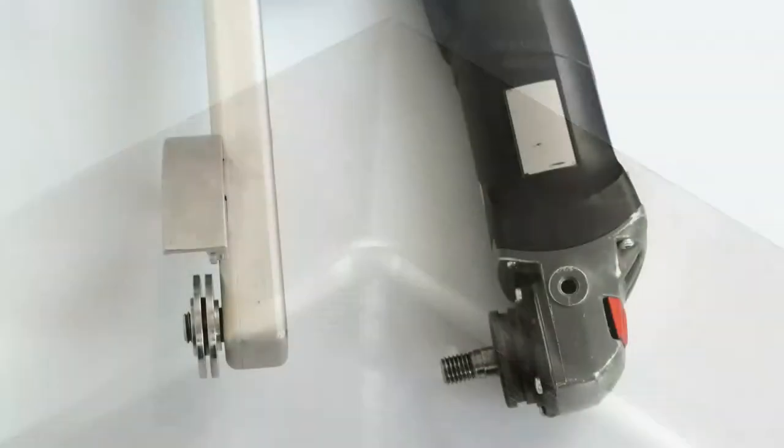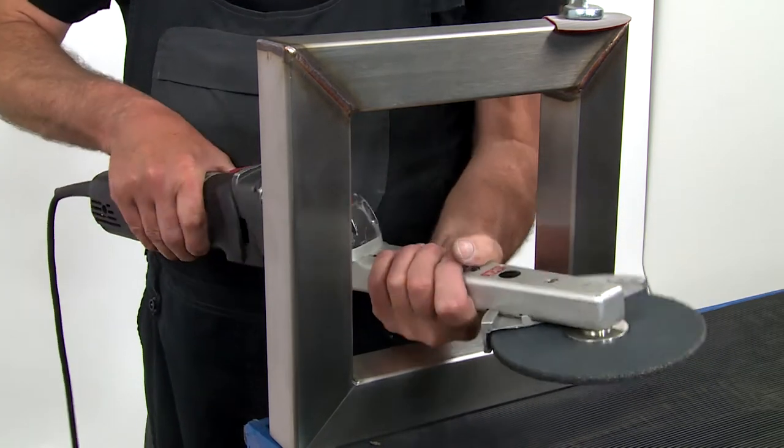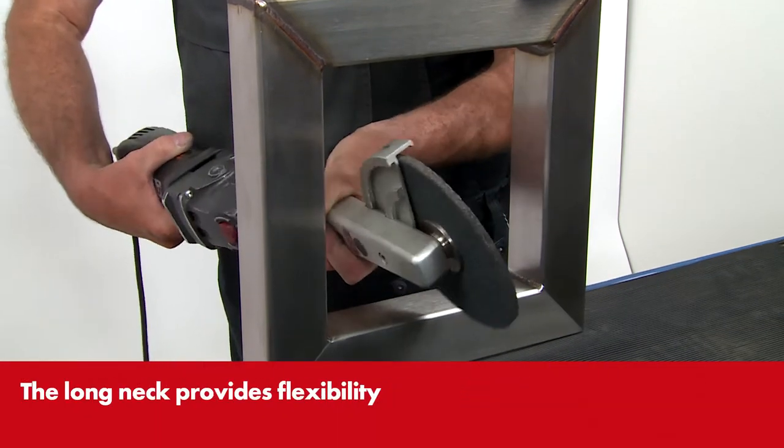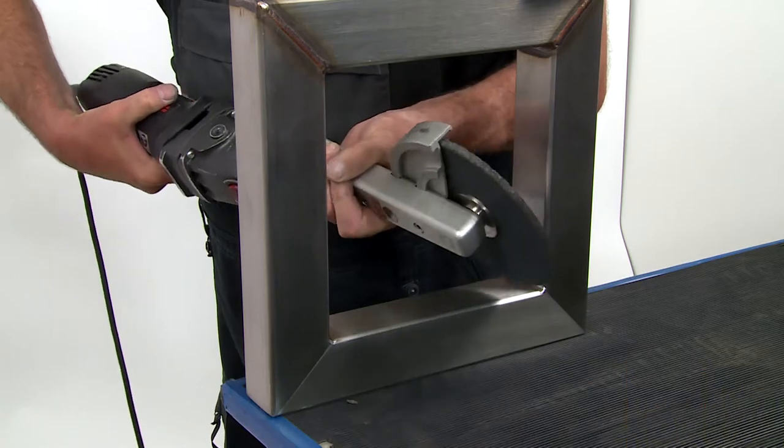In 80% of cases, the internal weld seam is left in place in the square tube and just the heat tint colors are removed. The angle sander is not suitable for removing the heat tint colors here as the gear head is in the way. The fillet weld sander, on the other hand, has a long neck which allows optimal operation. By means of the long neck of the sander, you can work flexibly according to the respective situation.